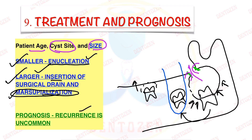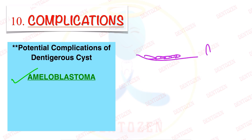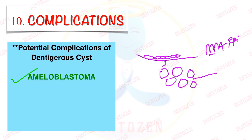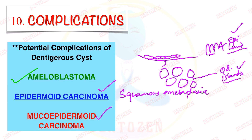Prognosis: recurrence chances are low. Potential complications include three: first, ameloblastoma — which can develop from the epithelial lining or the odontogenic epithelial islands when they become active; second, epidermoid carcinoma — from squamous metaplasia of the epithelial lining or odontogenic islands; third, mucoepidermoid carcinoma — if mucous metaplasia occurs (mucus cells converting), it can form mucoepidermoid carcinoma, a malignant salivary gland tumor.